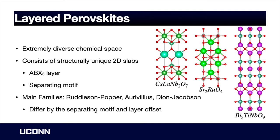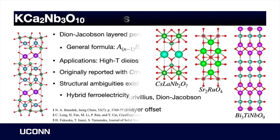There are three different main families of layered perovskites. These are the Ruddlesden-Popper, Aurivillius, and Dion-Jacobson families, and they differ from each other by the local structure of the separating motif as well as the layer offset.